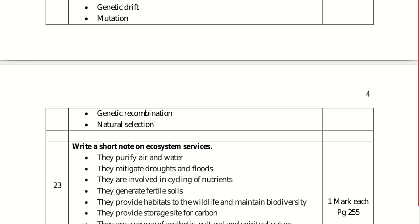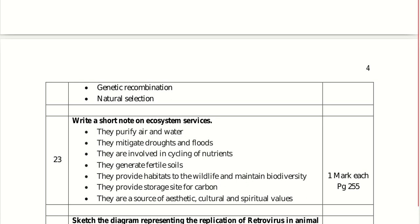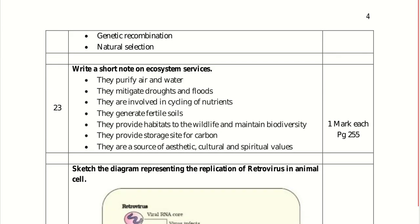Write a short note on ecosystem services. Ecosystems purify air and water, mitigate droughts and floods, cycle nutrients, generate fertile soils, provide habitats for wildlife and maintain biodiversity, provide storage sites for carbon, and are a source of aesthetic, cultural, and spiritual values. Write any three to four of these points.